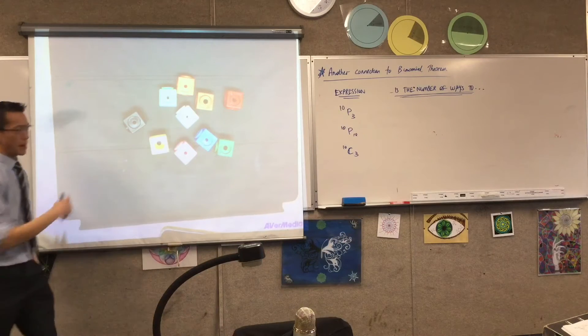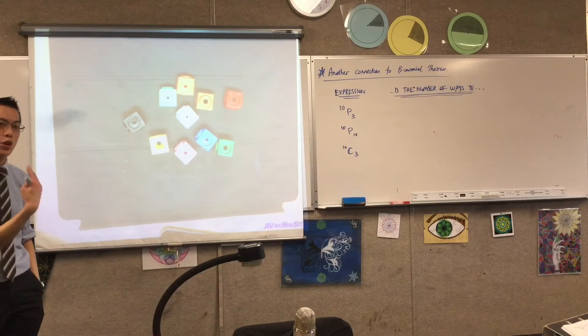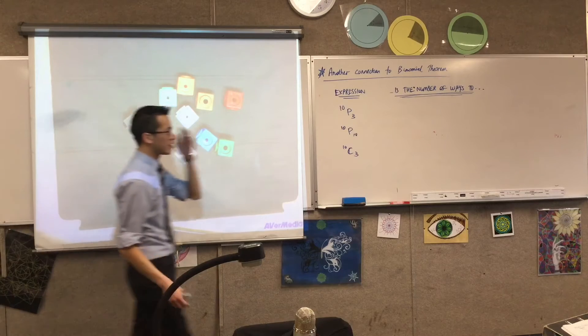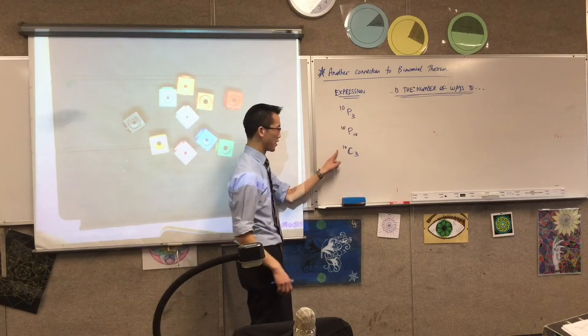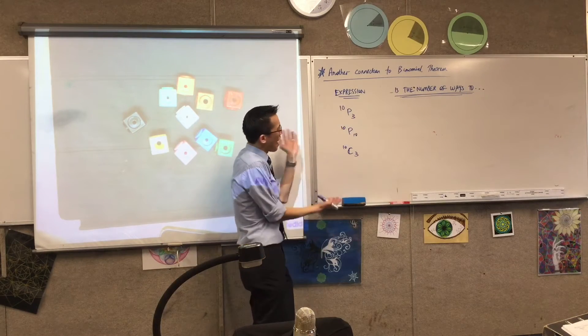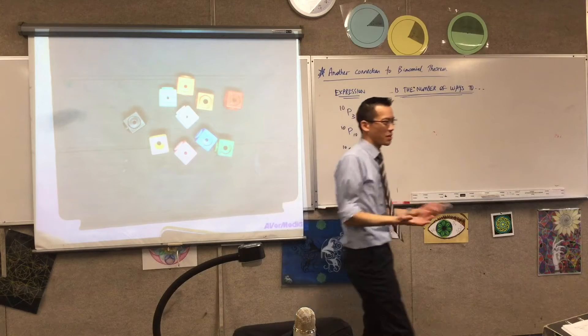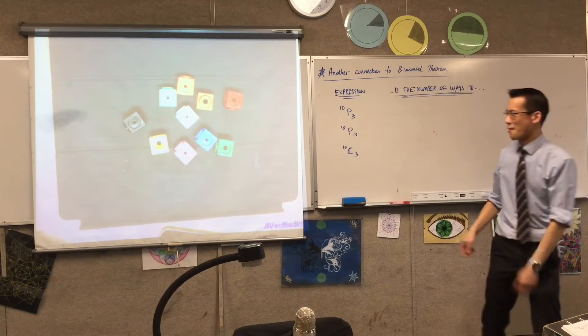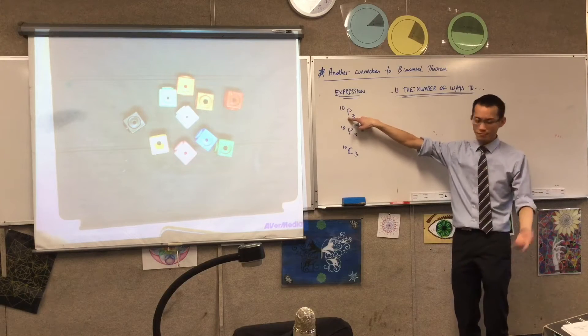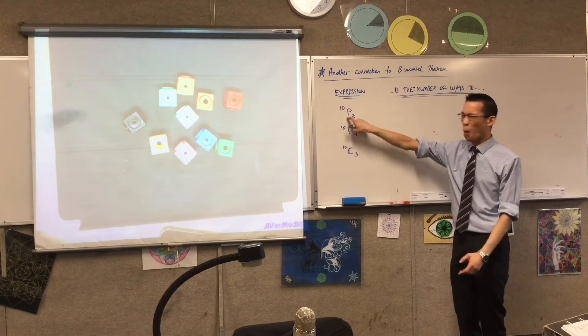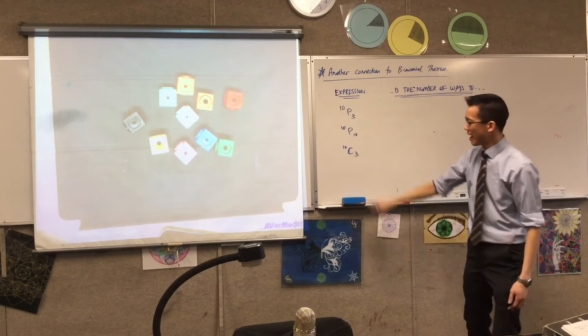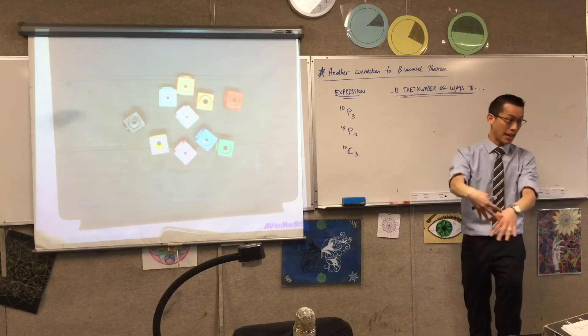If I said to you, 10P3, by the way, I would just say, sometimes this is colloquially read as 10P3 versus 10 choose 3. I get it, but I don't really like it, because what's the difference between choosing and picking? Whereas there is a difference between a permutation and a combination. Order matters, you're arranging things, and here order doesn't matter, you're just putting them in a heap.